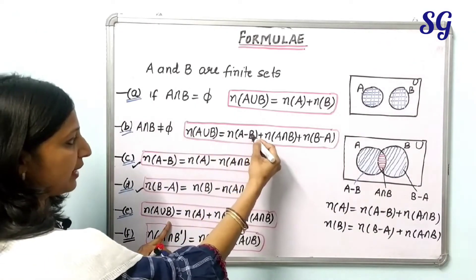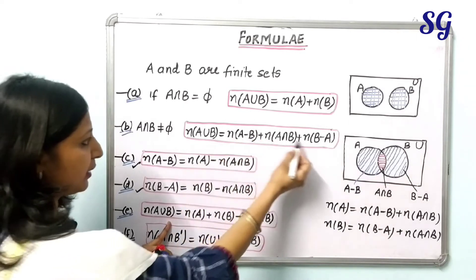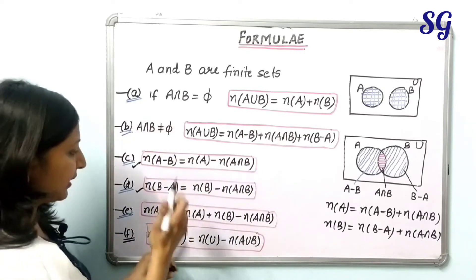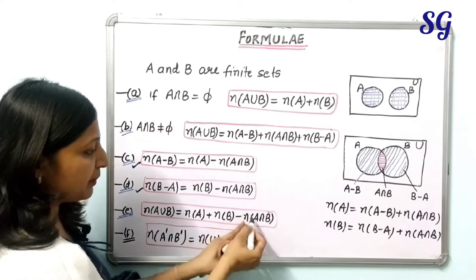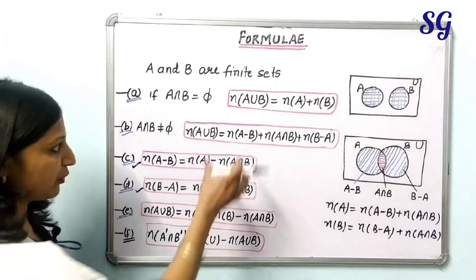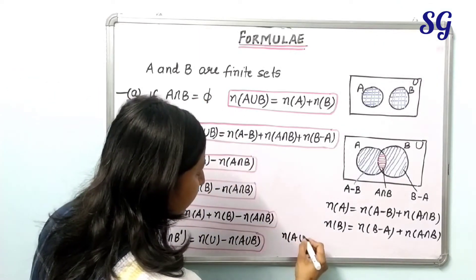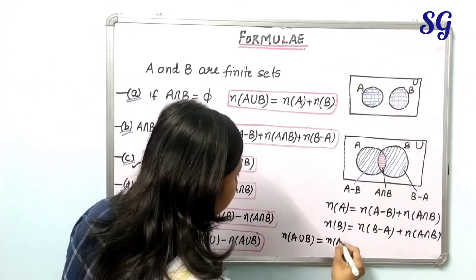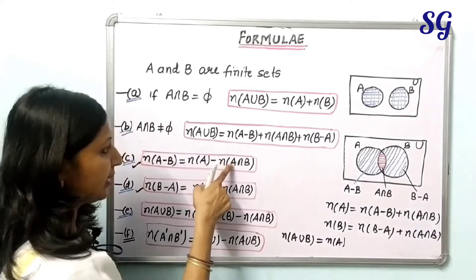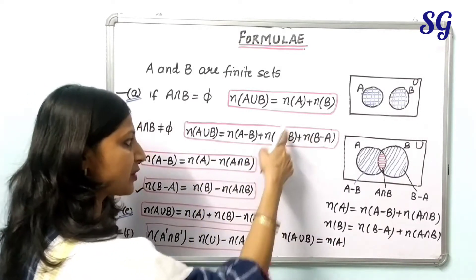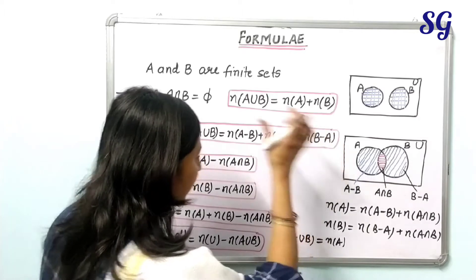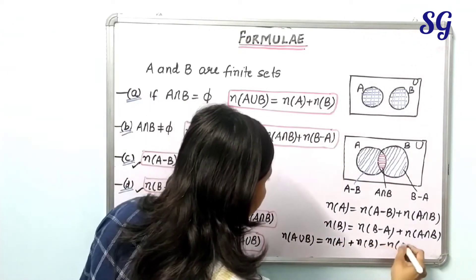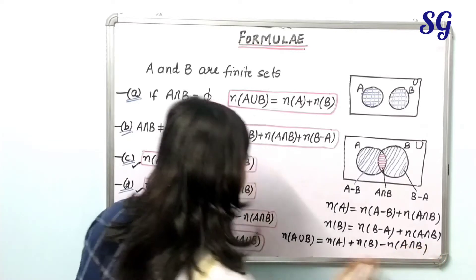Now let's derive the next formula: number of elements in A union B. We substitute the formulas for n(A minus B) and n(B minus A) into formula 2. After substituting, n(A∪B) = [n(A) - n(A∩B)] + n(A∩B) + [n(B) - n(A∩B)]. The n(A∩B) terms simplify, and we get n(A∪B) = n(A) + n(B) - n(A∩B). This is the key formula students should remember.